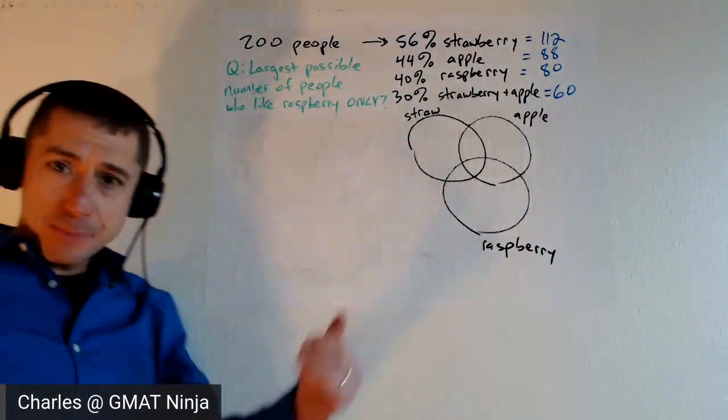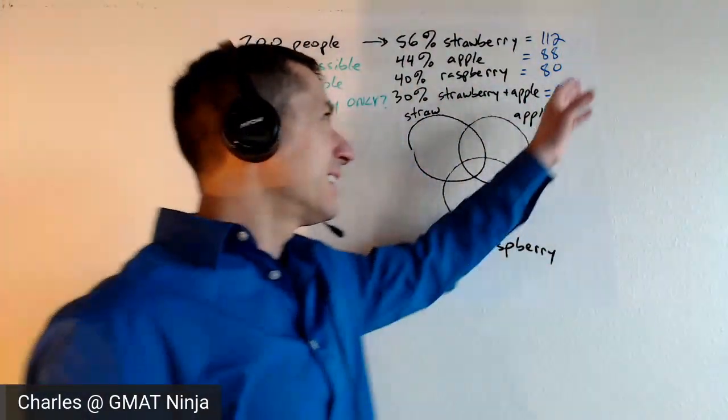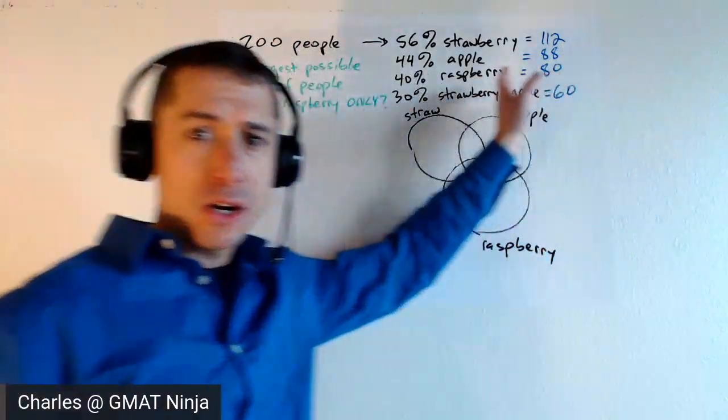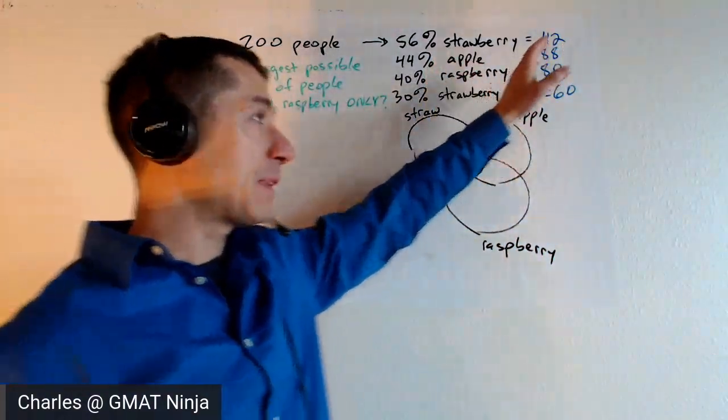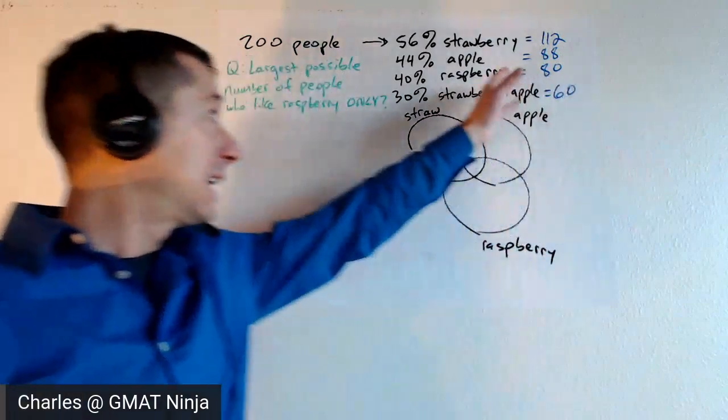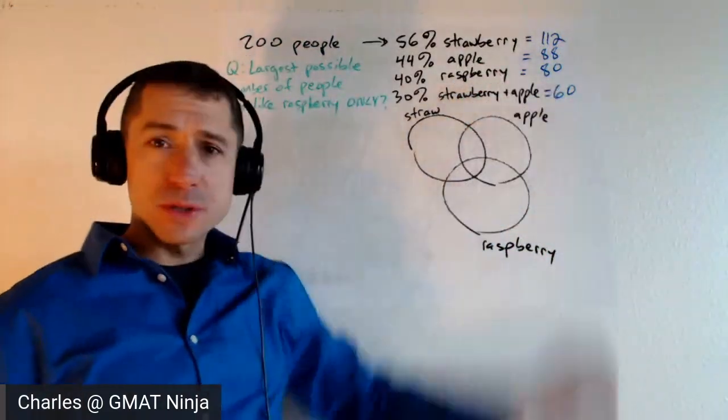What's the largest number of people who like raspberry only? A little bit easier to think about in this question. So I've got 112 people that like strawberry jam, 80 that like apple jam, 80 that like raspberry, and 60 that like both strawberry and apple.